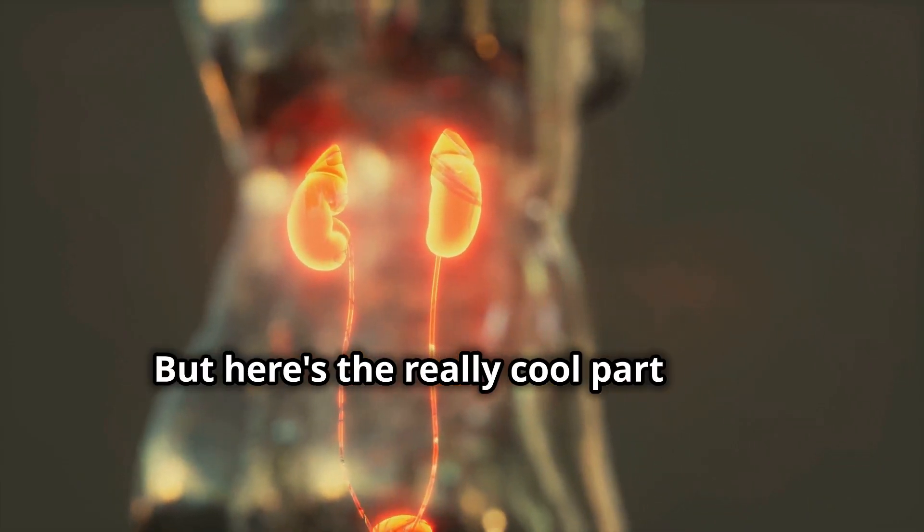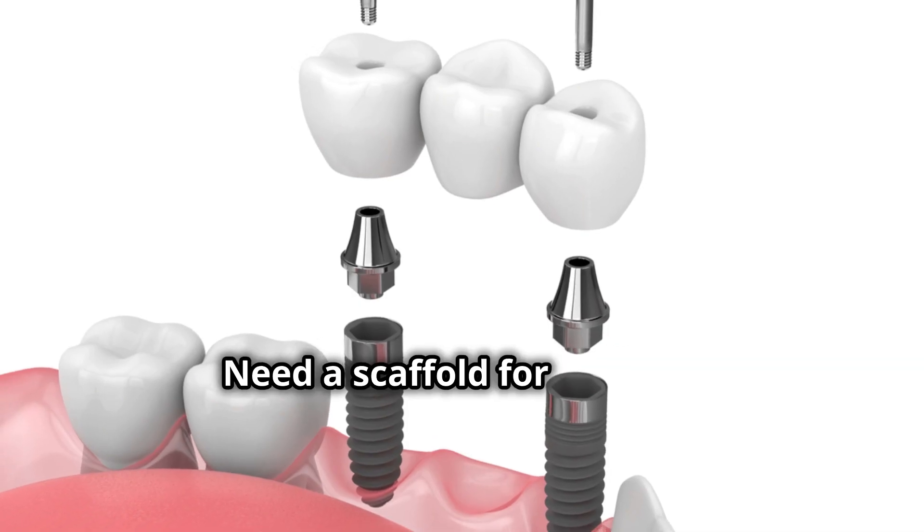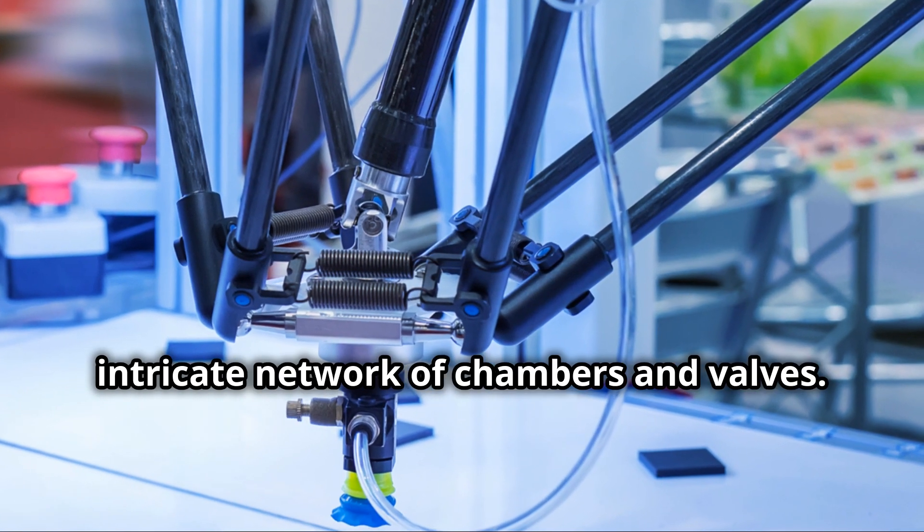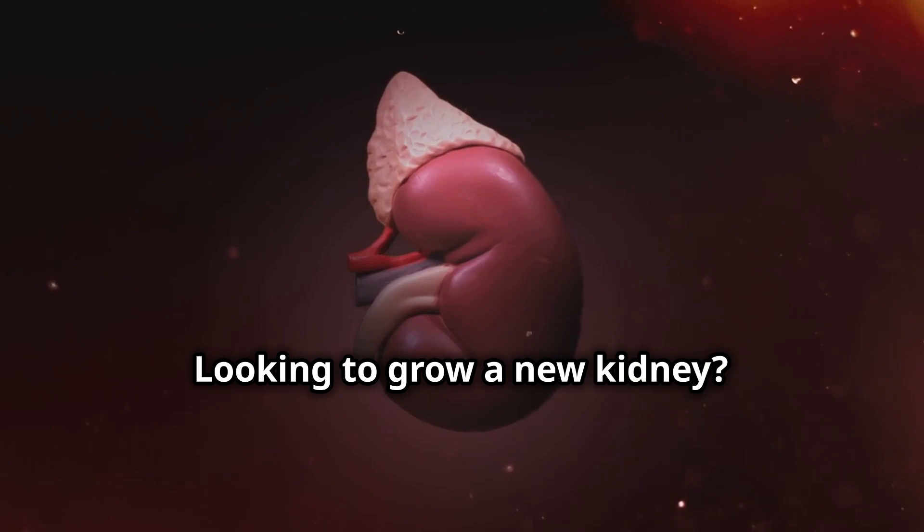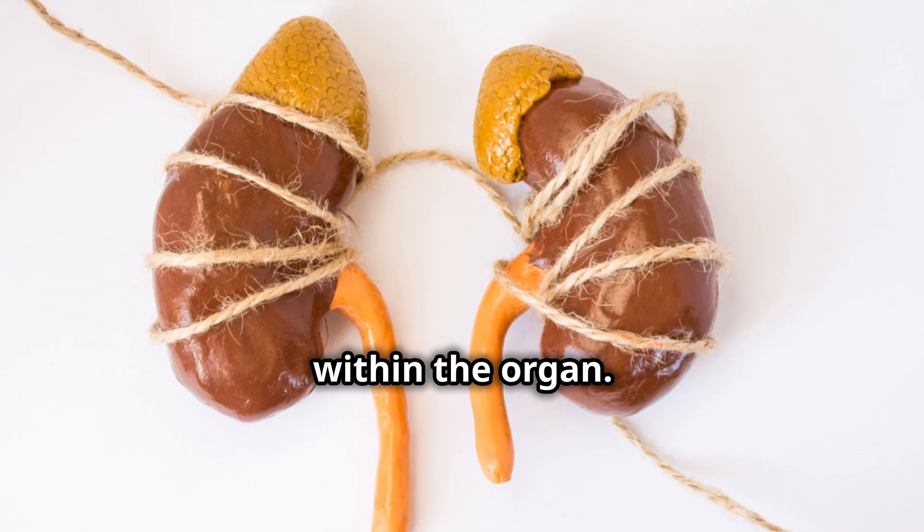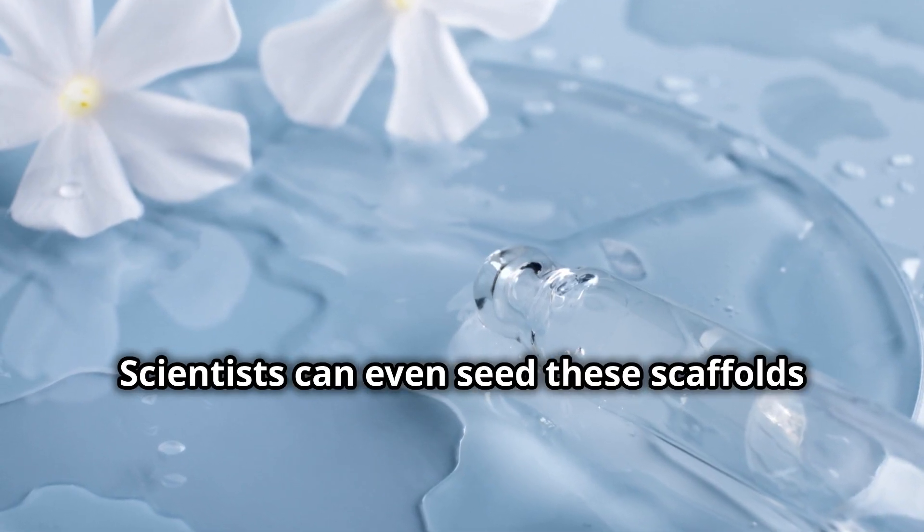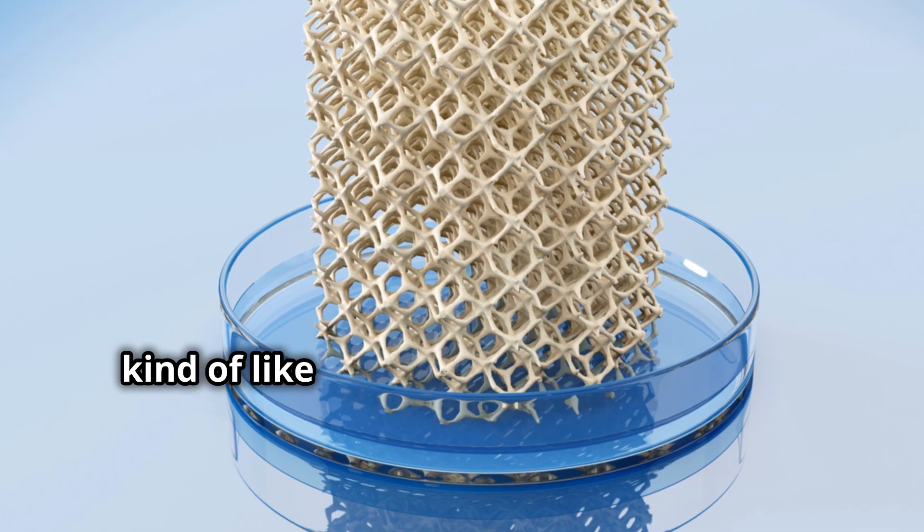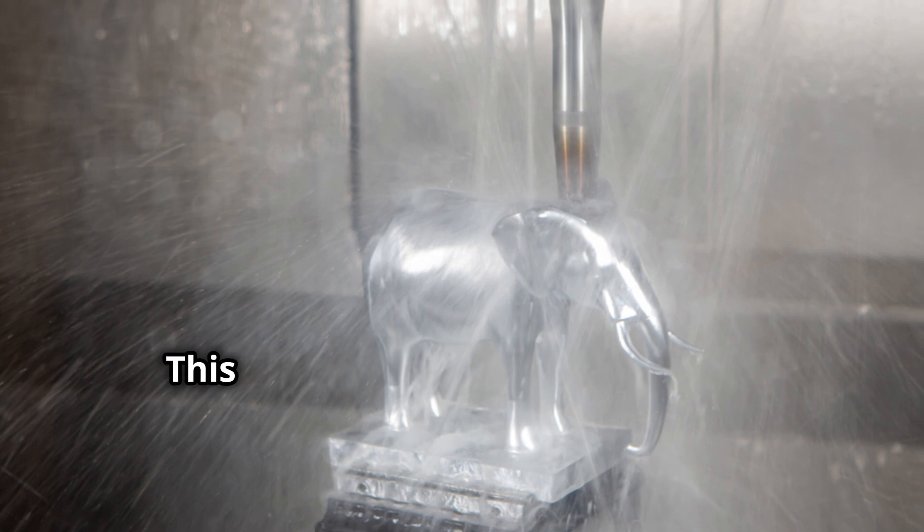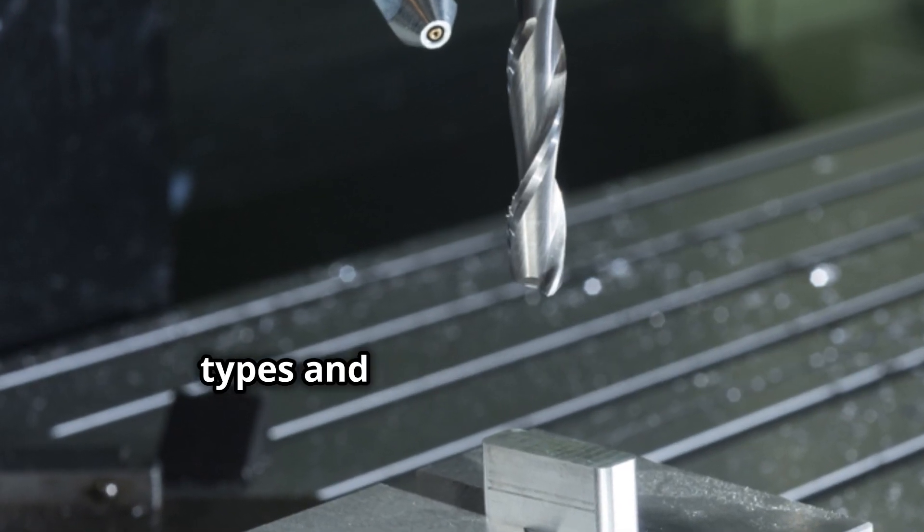But here's the really cool part: these scaffolds can be customized to the specific organ being created. Need a scaffold for a heart? Scientists can create one that mimics the intricate network of chambers and valves. Looking to grow a new kidney? They can design a scaffold that replicates the delicate filtering units within the organ. And it gets even more impressive. Scientists can even seed these scaffolds with different types of cells in specific patterns, kind of like creating a cellular roadmap for the organ to follow as it grows.